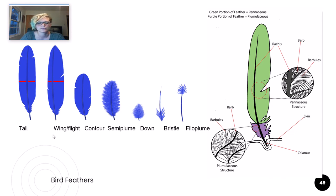Tail, wing or flight, contour, semi-plume, down, bristle, and phylo-plume. Every bird will have multiple types of feather on its body in different locations.